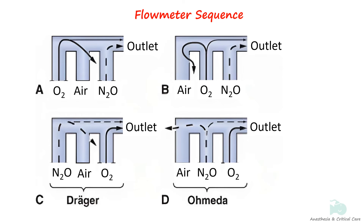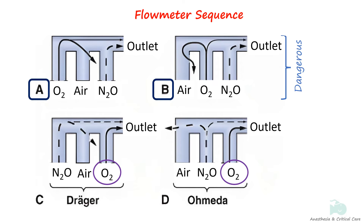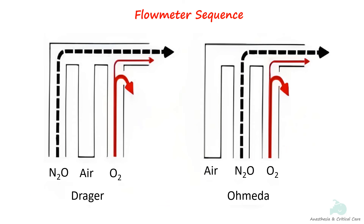The oxygen flow meter is positioned on the right side, or most distally in the rotometer bank, downstream from the other flow meters and closest to the common gas outlet. In the event of a leak in one of the other flow meter tubes, this position is least likely to result in a hypoxic mixture. In configurations A and B, a hypoxic mixture can result because a substantial portion of oxygen flow passes through the leak and all nitrous oxide is directed to the common gas outlet. The configuration in C and D has oxygen located downstream, which prevents hypoxic mixture at the gas outlet. However, a leak in the oxygen flow meter tube itself can cause a hypoxic mixture even when oxygen is in the downstream position.